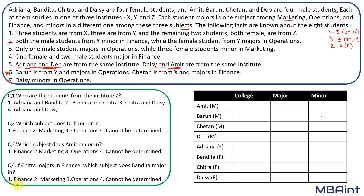The first four students are male and the next four are female. Let's start by putting in the static information. Barun is from college Y, is male, and his major is in operations. Chetan is from X and majors in finance. Daisy minors in operations. Now we'll go back and read each statement to fill in more using what we have.